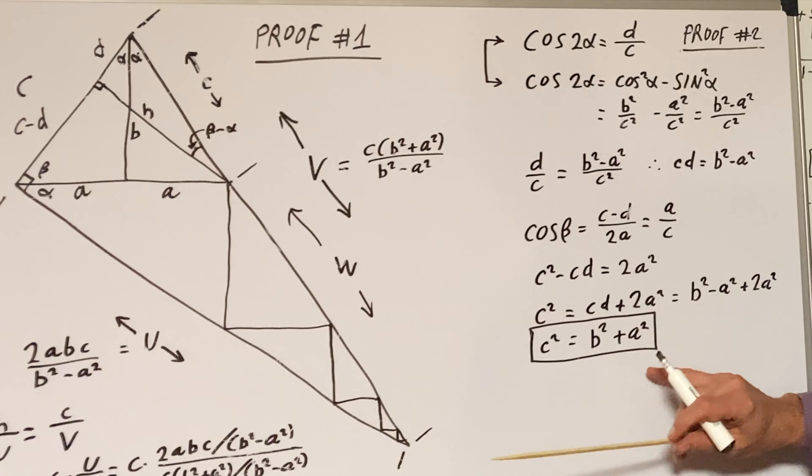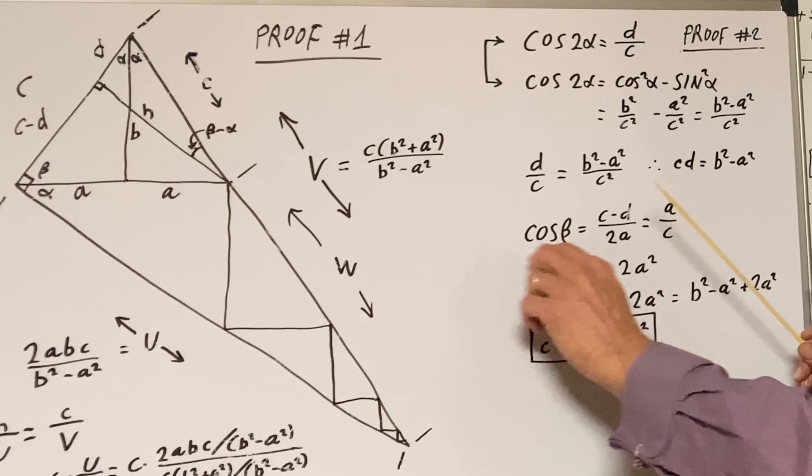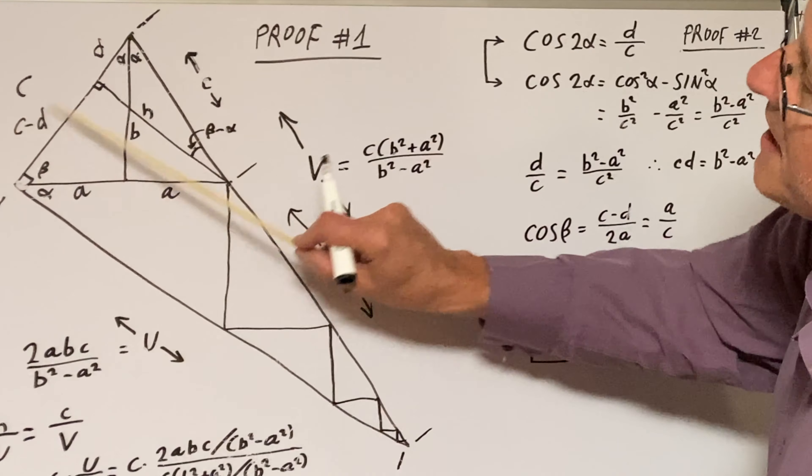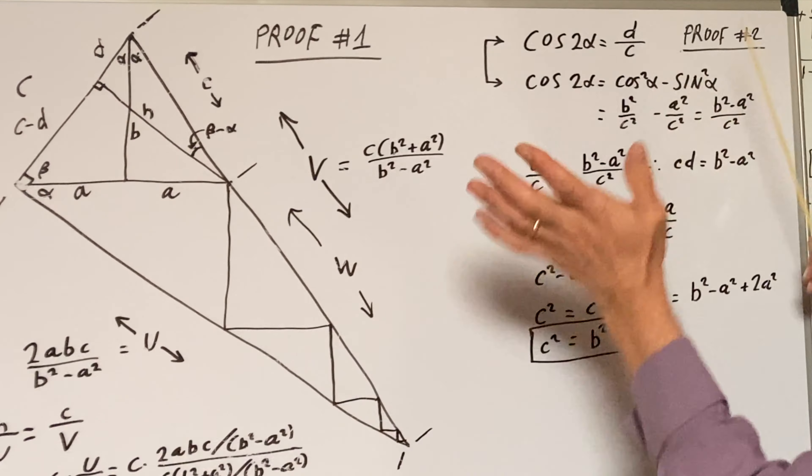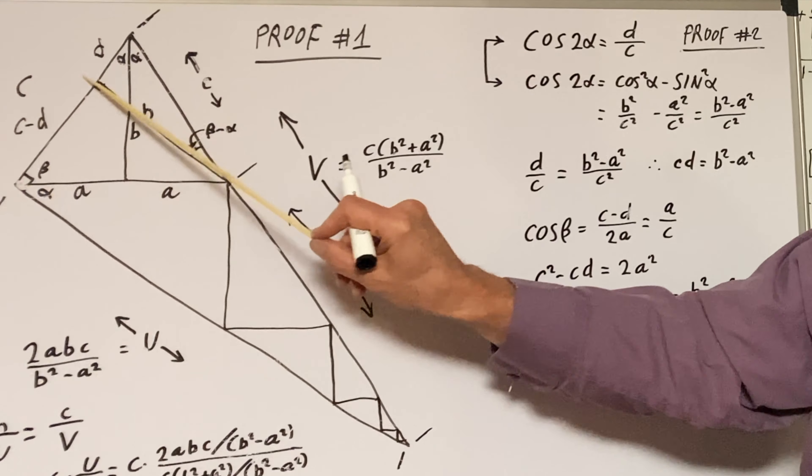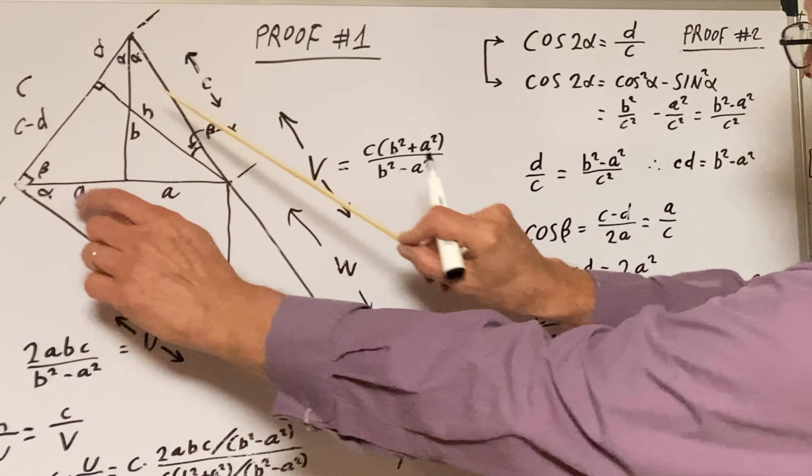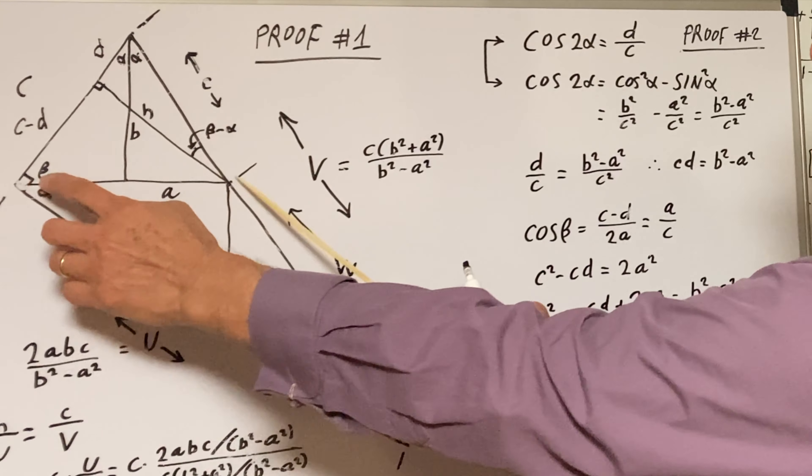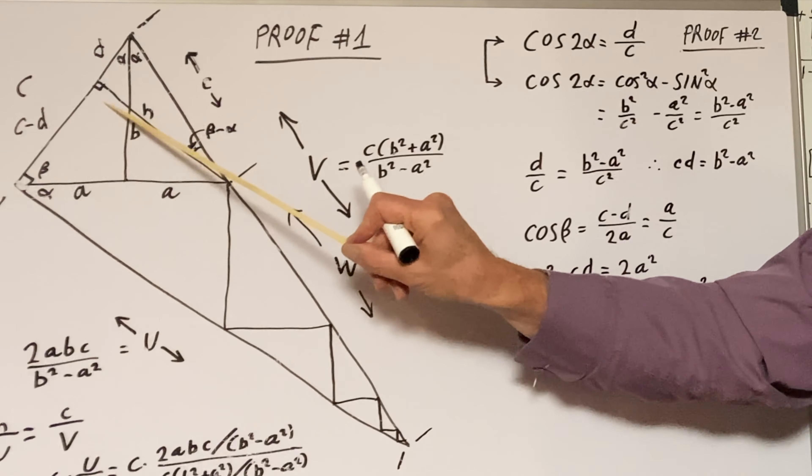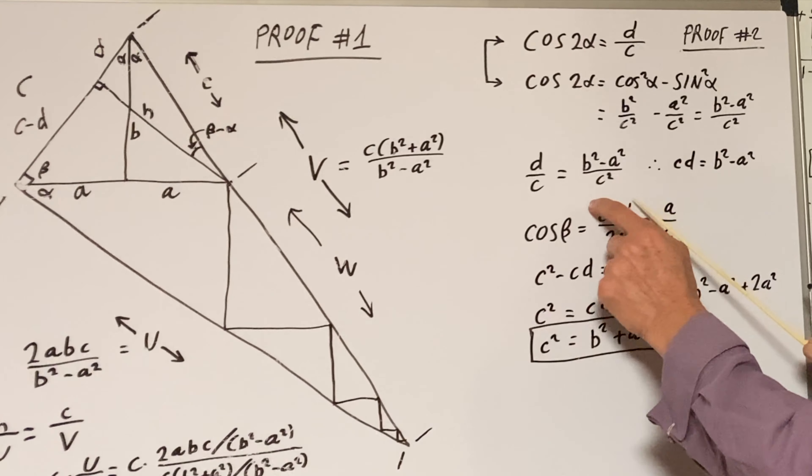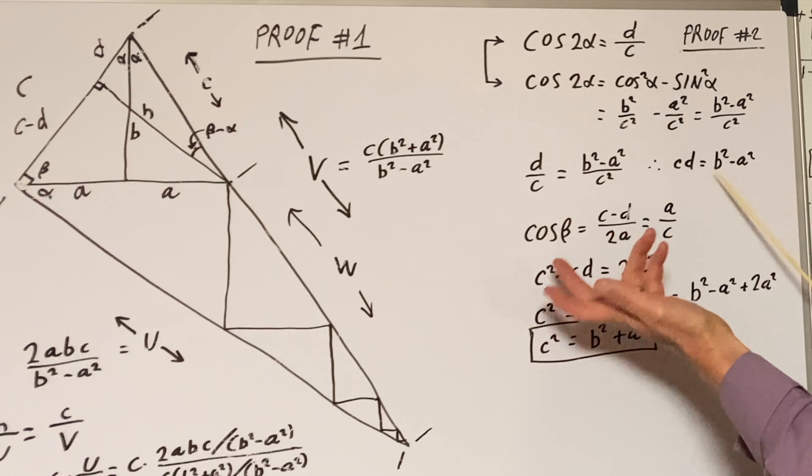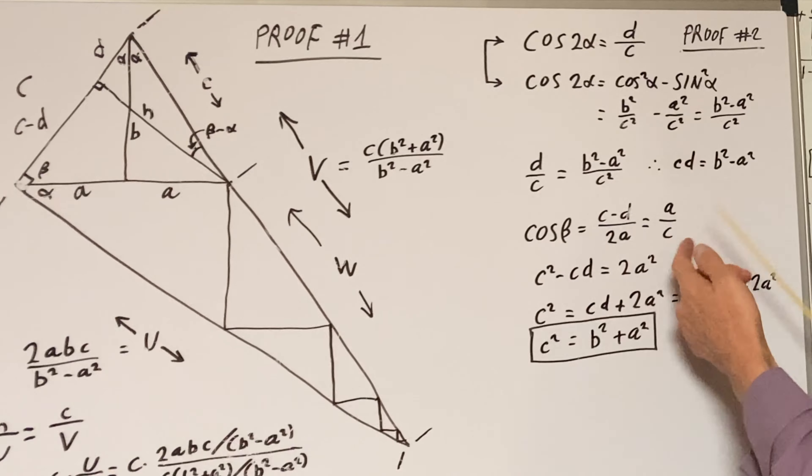Now let's look at things from this section, the C minus D section. We're saying cosine of beta, that's adjacent C minus D, this segment, over 2A which is the hypotenuse. This is a right triangle. So C minus D over 2A, which is cosine of beta.